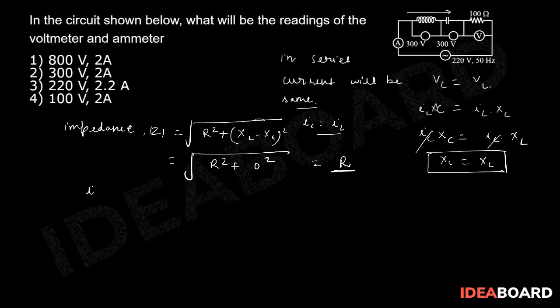Now I can find out the value of current. I equals V upon mod Z. I equals V, which is 220, divided by mod Z. Mod Z is nothing else but R, and the value of R given in the question is 100 ohms. This is cancelled out, so 2.2 amperes.